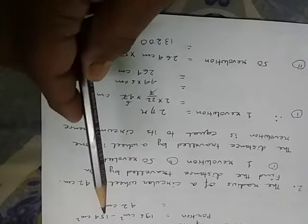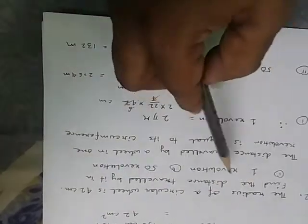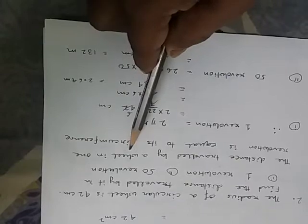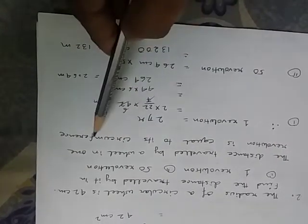Now the radius of a circular wheel is 42 cm. Find the distance travelled by it in 1 revolution, 50 revolution. So here I would like to say that distance travelled by a wheel in 1 revolution is equal to its circumference.